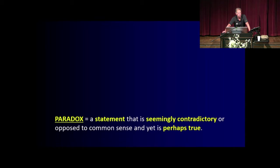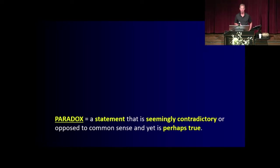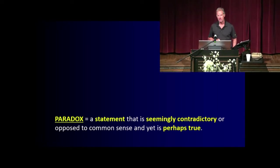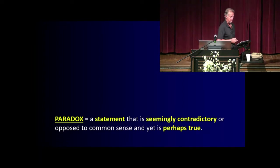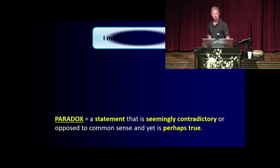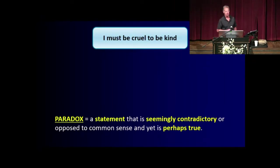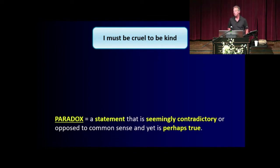Now, the word paradox is something we're going to look at tonight. A paradox — this is just a general definition — is a statement that is seemingly contradictory or opposed to common sense, and yet is perhaps true. That's what we would call a paradox. Like this example: this is a line from the Shakespeare play Hamlet — 'I must be cruel to be kind.' If you look at that, you think, wait, that doesn't quite make sense.